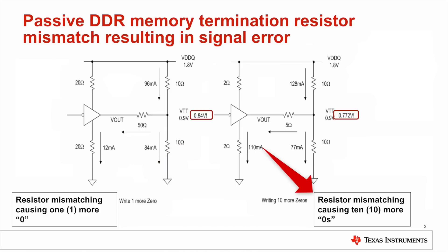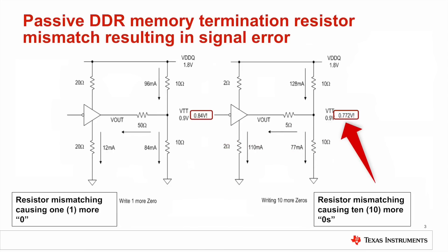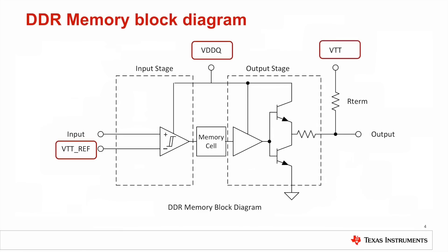As you can see here, this is an example of passive termination resistor mismatch causing bit errors. Notice how the VTT voltage also varies. The VTT voltage tolerance should not exceed plus or minus three percent of VTTQ over two. Both VTT voltages in this example are outside the VTT tolerance window. Active VTT termination reduces power dissipation and ensures data write and read accuracy and integrity.